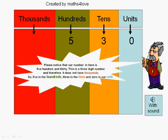Please notice that our number in a year is 530. This is a 3-digit number, and therefore it does not have thousands. So, 5 is the hundreds, 3 is the tens, and 0 is our unit in here.